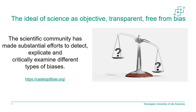Especially since the famous 2005 paper 'Why Most Published Research Findings Are False,' which was a bit of a bomb for the scientific community and also for the public, the scientific community has made substantial efforts to detect, explicate, and critically examine different types of bias. There's even a catalogue of bias from the Oxford Centre for Evidence-Based Medicine where you can look at different types with examples.